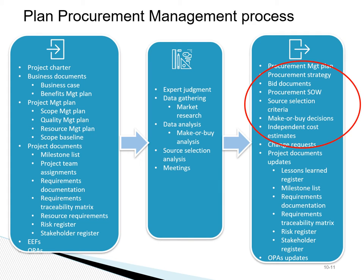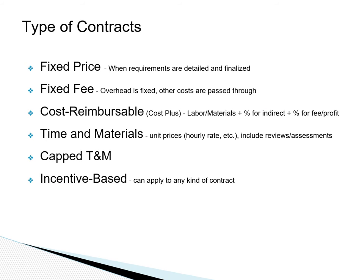In the planning stage, we use project documents such as the resource requirements document that identifies resources required for the project. We then determine whether it makes sense to make the resource or buy the resource. If we decide to buy it, then we need to research the marketplace and determine what sources are available for acquiring that resource. After we identify the resources we need to acquire, we need to decide what is the appropriate type of contract for acquiring those resources.